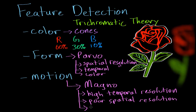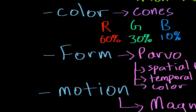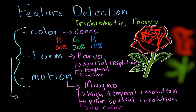The magno pathway does not encode any color — it simply encodes motion. Our ability to detect these three different features whenever we're looking at an object all happens at the same exact time. When I'm looking at a rose, I don't first focus on color, then form, then motion — I get all this information simultaneously. Our ability to process all three things at once is known as parallel processing.